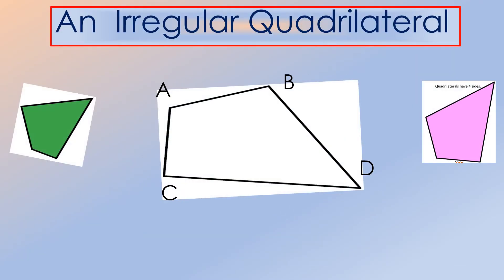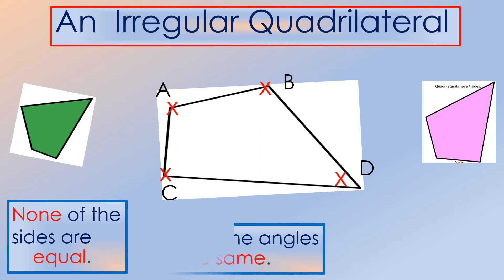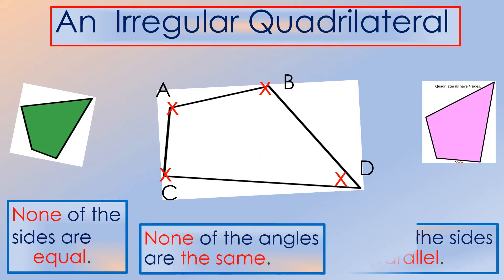And finally, down to our last figure. We call it an irregular quadrilateral. It is called an irregular quadrilateral because none of the sides are equal, none of the angles are the same, and none of the sides are parallel either. All the sides have different lengths.